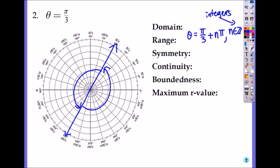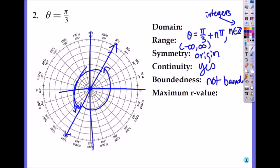The range will be all of your numbers, negative infinity to positive infinity and symmetry, not on the y-axis, neither x-axis, but it's on the pole. It goes to the other side of the pole, so you can say origin. And continuity will be, it is continuous, there's no discontinuity, so yes. And it is not bounded, because it goes to positive and negative infinity. Maximum r value equals to infinity, therefore there's none.